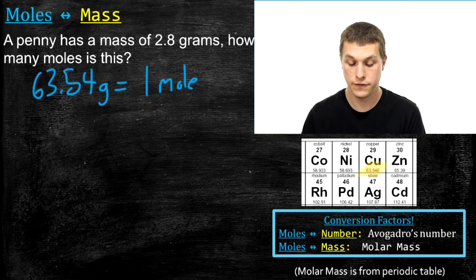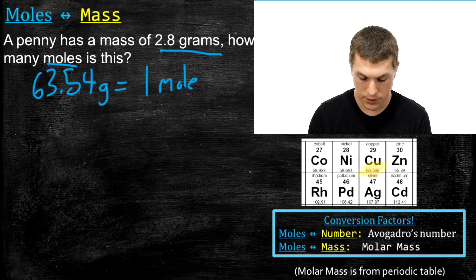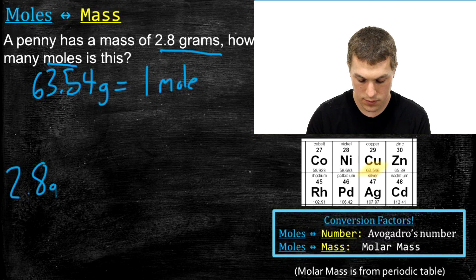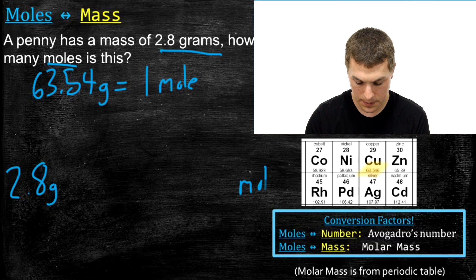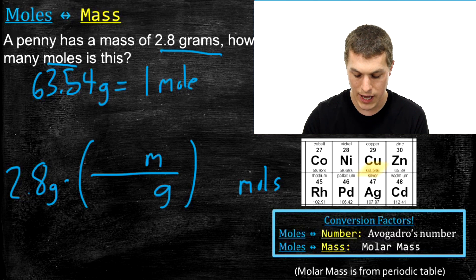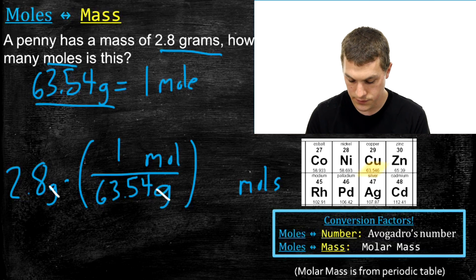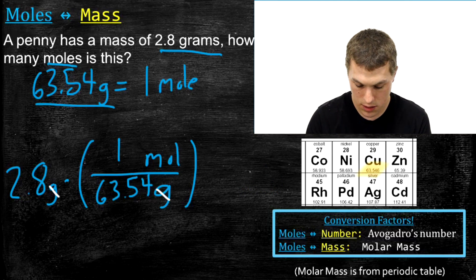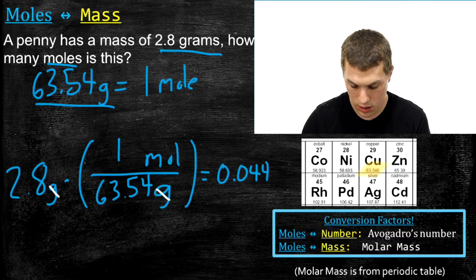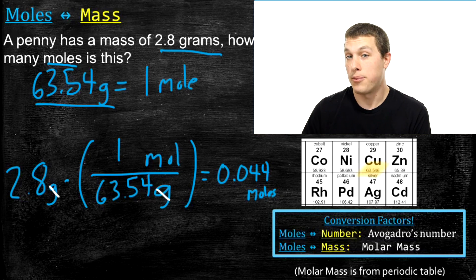Whenever you're doing moles-to-mass conversions, a good first step is to write down that equality. I have 2.8 grams of copper and I want to go to moles. I write down 2.8 grams, and in my conversion factor, grams goes on the bottom so it cancels, and moles goes up top. I write 63.54 next to grams and 1 next to moles. My grams cancel out, and when I do that division, I get 0.044 moles of copper atoms in a penny.